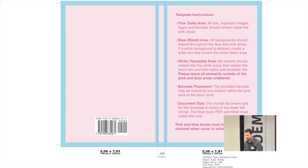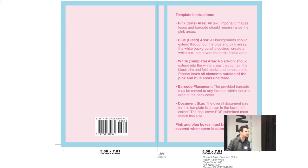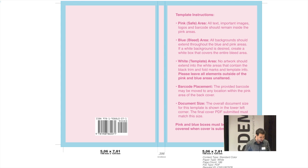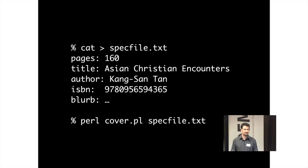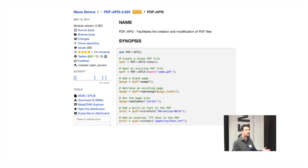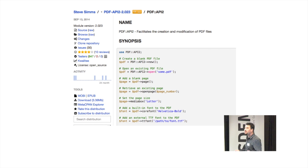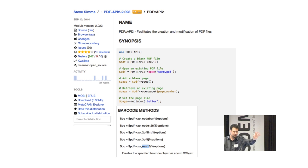You go to the printer, say you've got a book with this many pages, and you get a template — usually a PDF or Illustrator template. And you have to fire up Illustrator and use a GUI. But who wants to use a GUI? What we want to do, because we're Unix hackers, is just write the information to a spec file, fire up a Perl script and have that generate the cover for us. I found a module on CPAN that would help me produce PDFs.